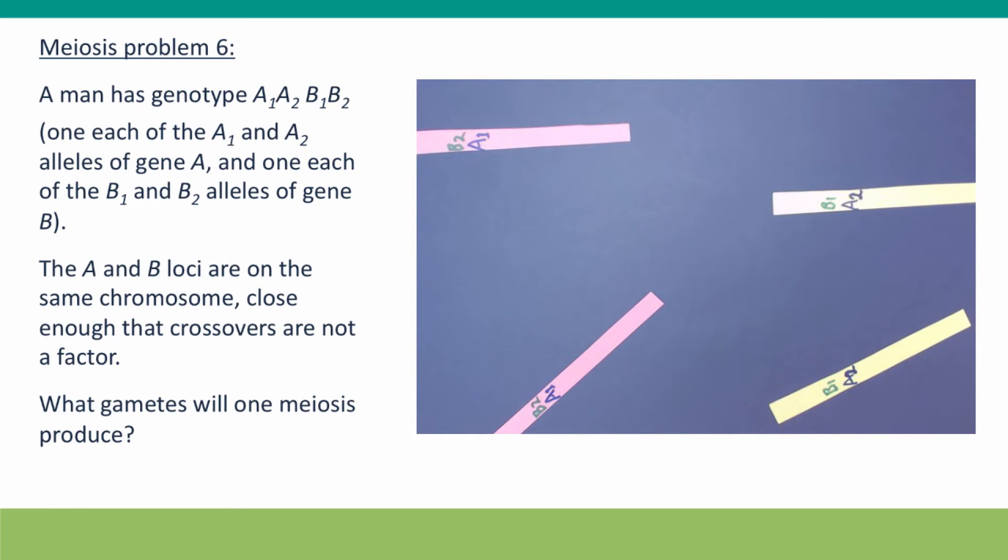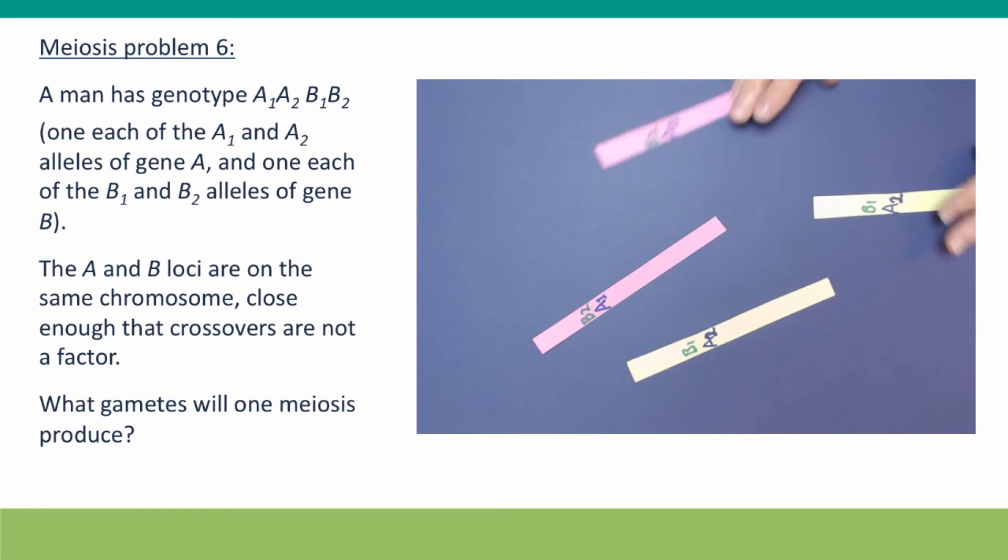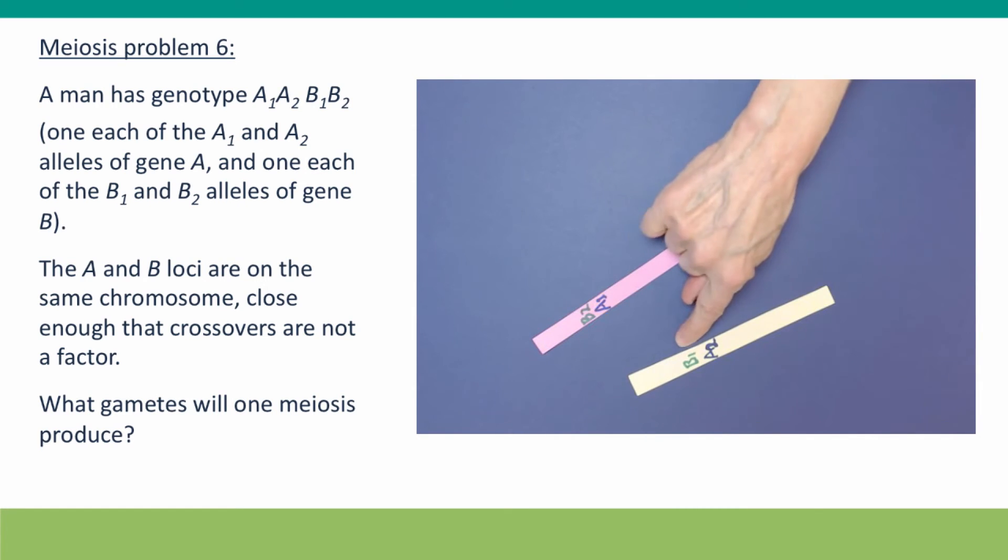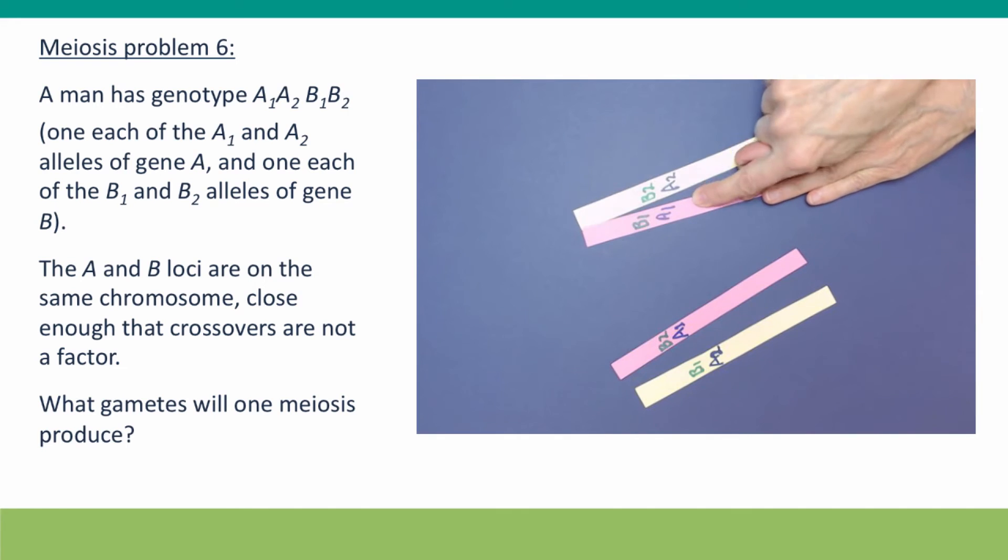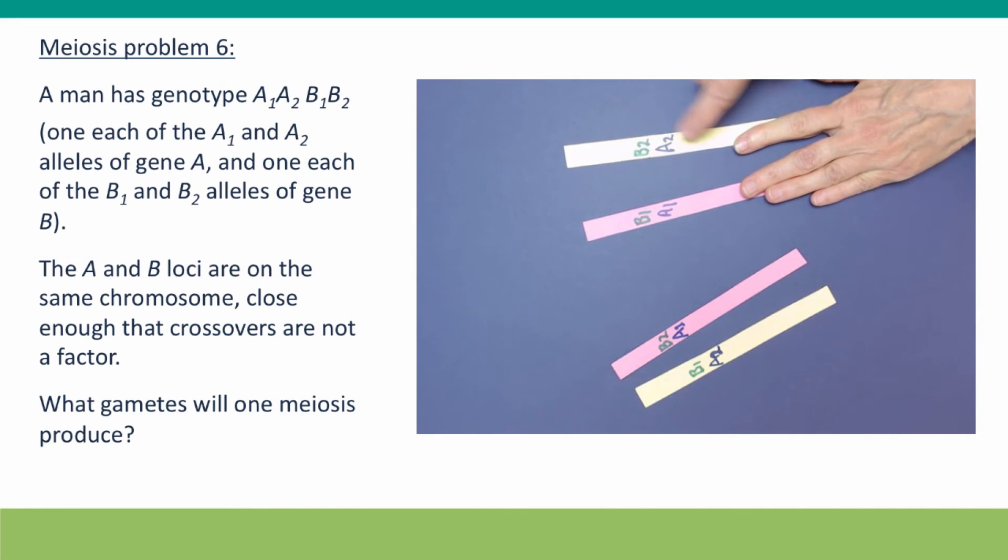Well, I misled you when I drew these chromosomes. I kind of led you to believe that this was really the only way they could be drawn. I didn't raise the possibility that what if instead of having B1 and A2 on one homolog and B2A1 on the other, what if instead B1 and A1 were on the same chromosome and B2 and A2 were on the same chromosome?